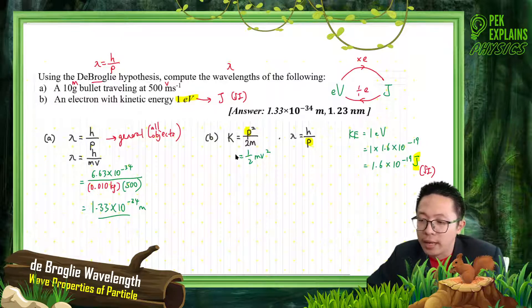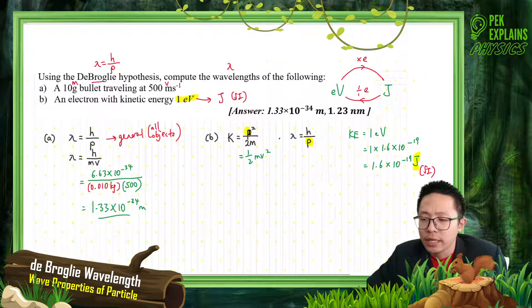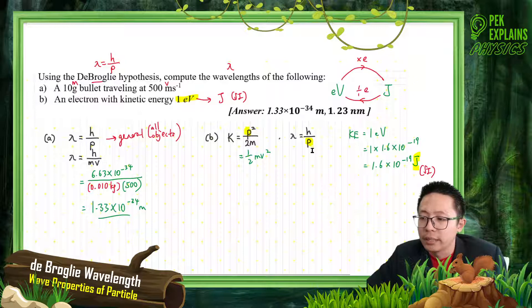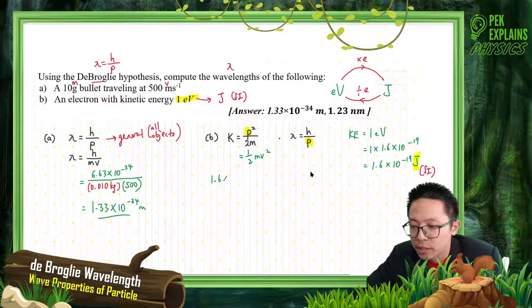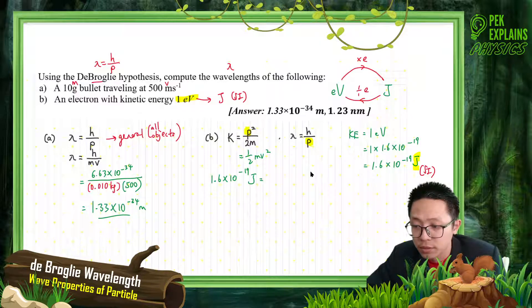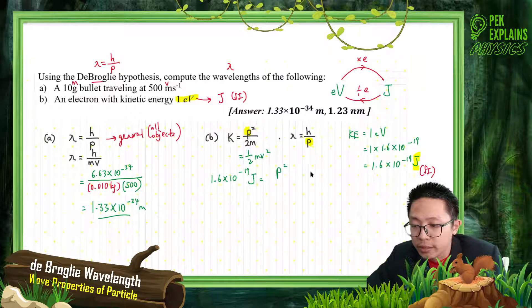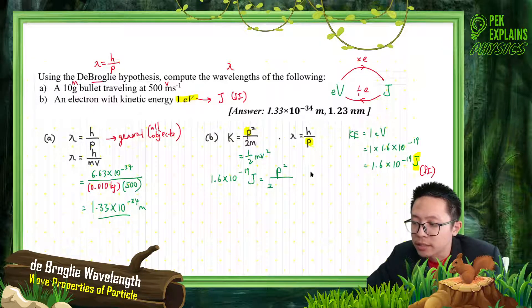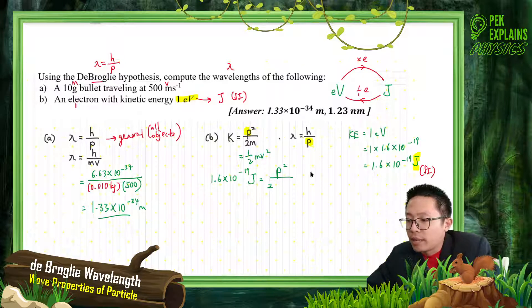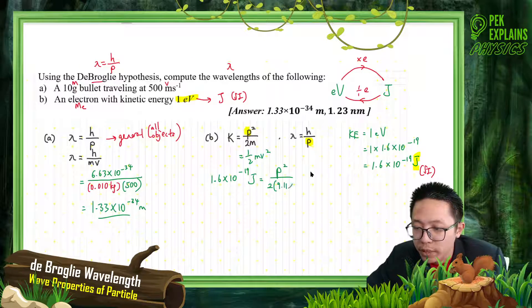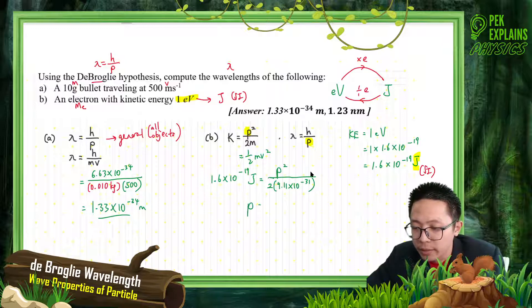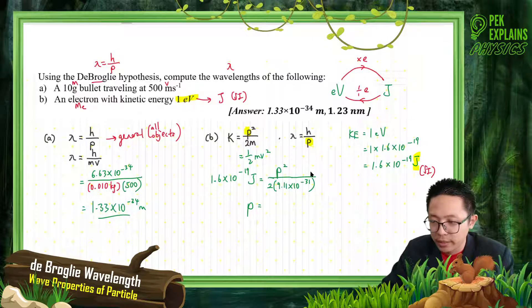Now I find the momentum first. Once from kinetic energy I got the momentum, I can substitute momentum here. I can get the wavelength of the electron. Let's calculate. This is 1.6 negative 19 joules. Remember, must be in joules first before you substitute. Then I want the momentum over 2m - mass, this is electron. So you're going to use mass of electron, which is 9.11 exponent negative 31. Now what is your momentum? Let's get your momentum. Let's calculate.